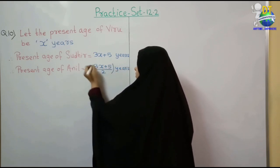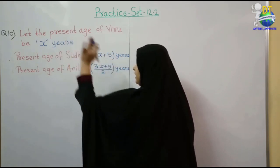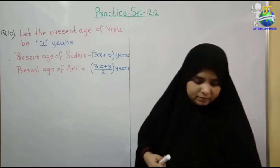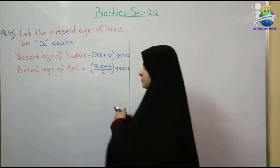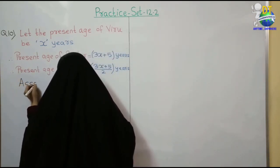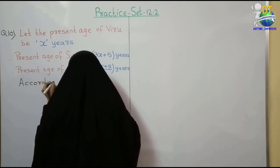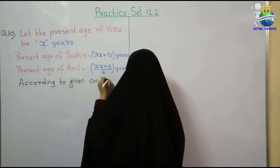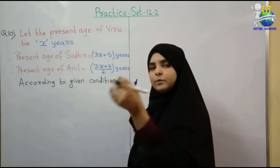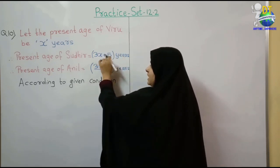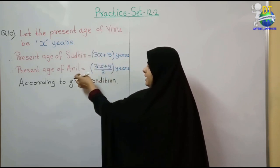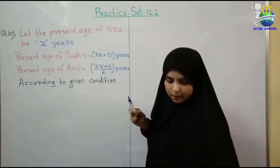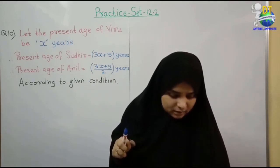Anil's age is half of Sudhir — Sudhir का आधा. Sudhir कितना है? 3x plus 5. उसका half means upon 2 — yes, very simple. So this is the age of Anil: (3x+5)/2. This is the age of Sudhir: 3x+5. This is the age of Viru: x. सबकी age पता है। According to given condition अब equation form करेंगे।